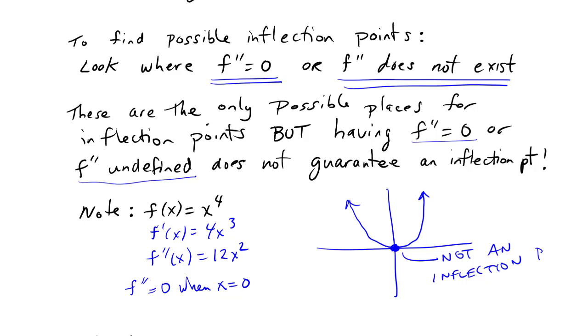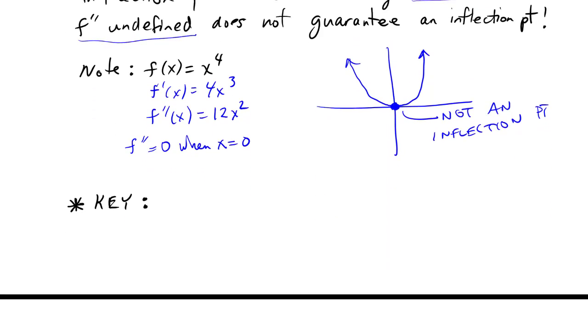It did have the second derivative equals zero but it's not an inflection point because the concavity didn't change. And that's the key.